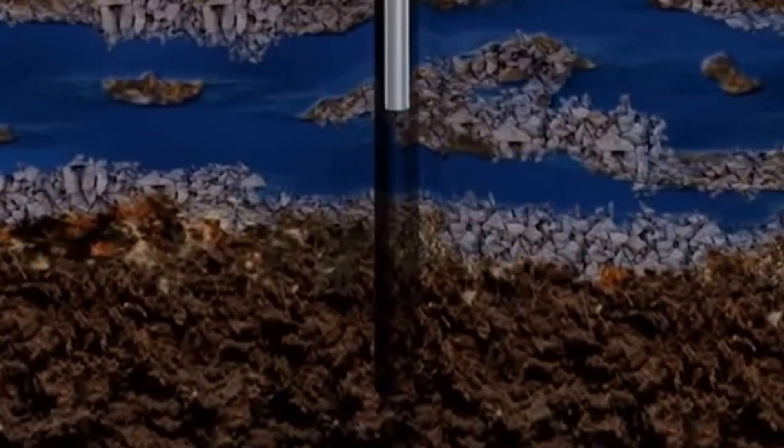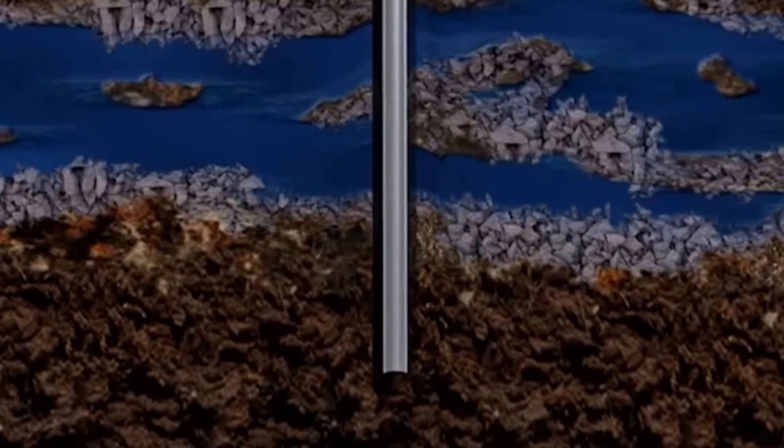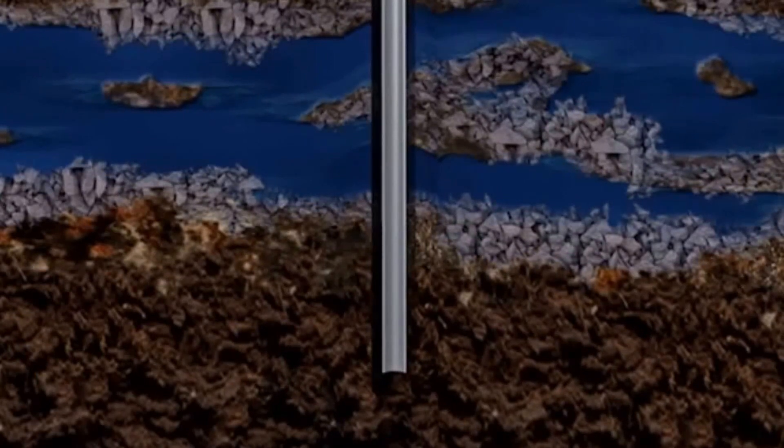Once the hole extends below the deepest freshwater aquifer, the drill pipe is removed and replaced with steel pipe called surface casing.